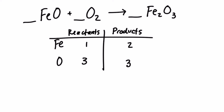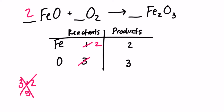Let's start with iron. Add a two coefficient in the reactant — that changes the iron to a two. However, that two distributes to the oxygen. A very common mistake here is that students add two to the three to give you five in the reactant, but that's wrong. We have to count the total instead. We only have two oxygen and two oxygen, so a total of four. Now we have four oxygen in the reactant and three in the product.